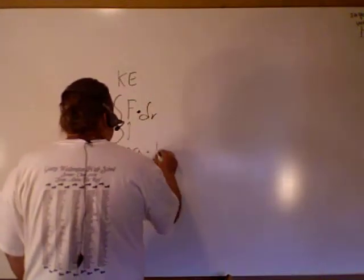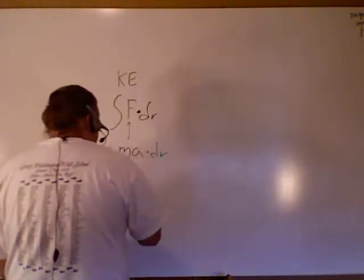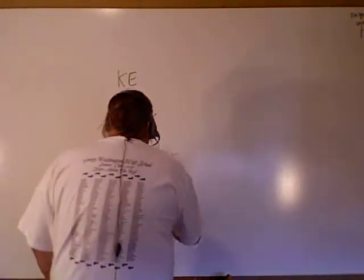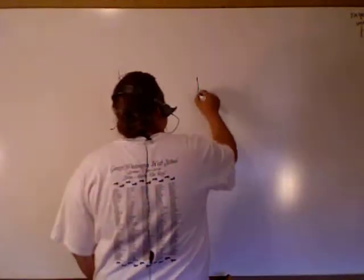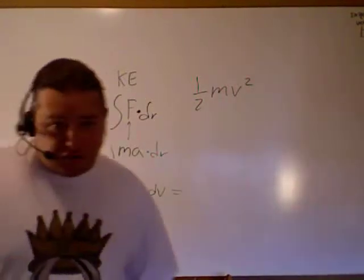So we did the substitution like this. Then we did some swapping around of variables, and we ended up with this, which is giving us the equation of one half mv squared. That's kinetic energy.